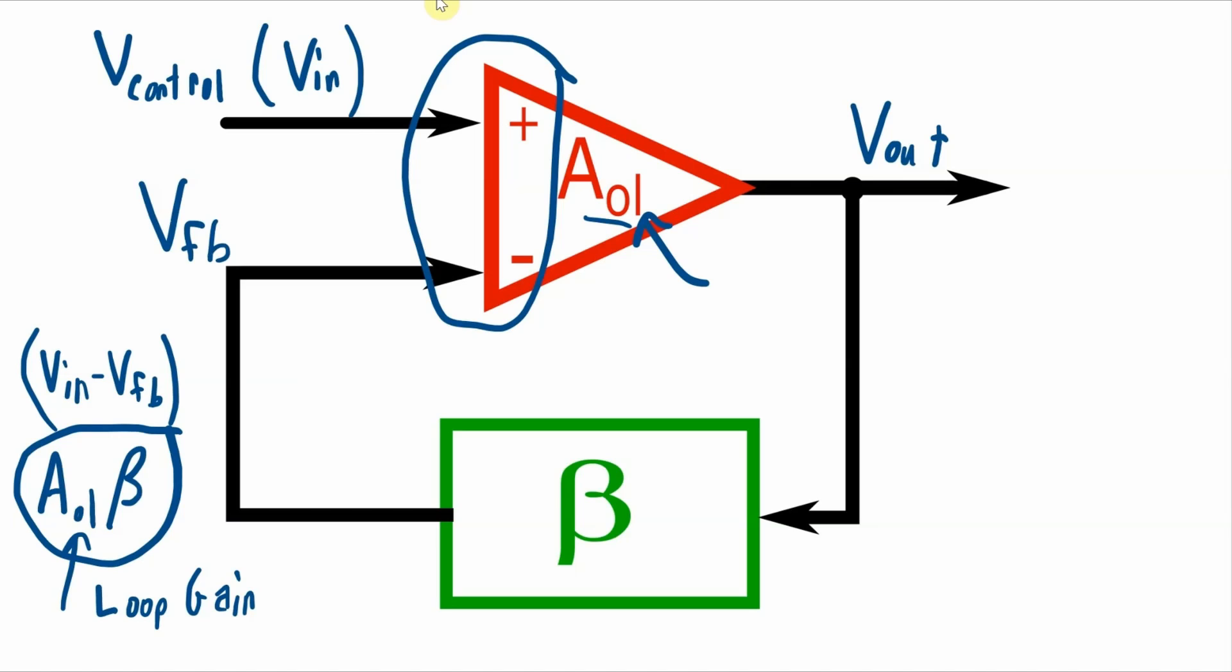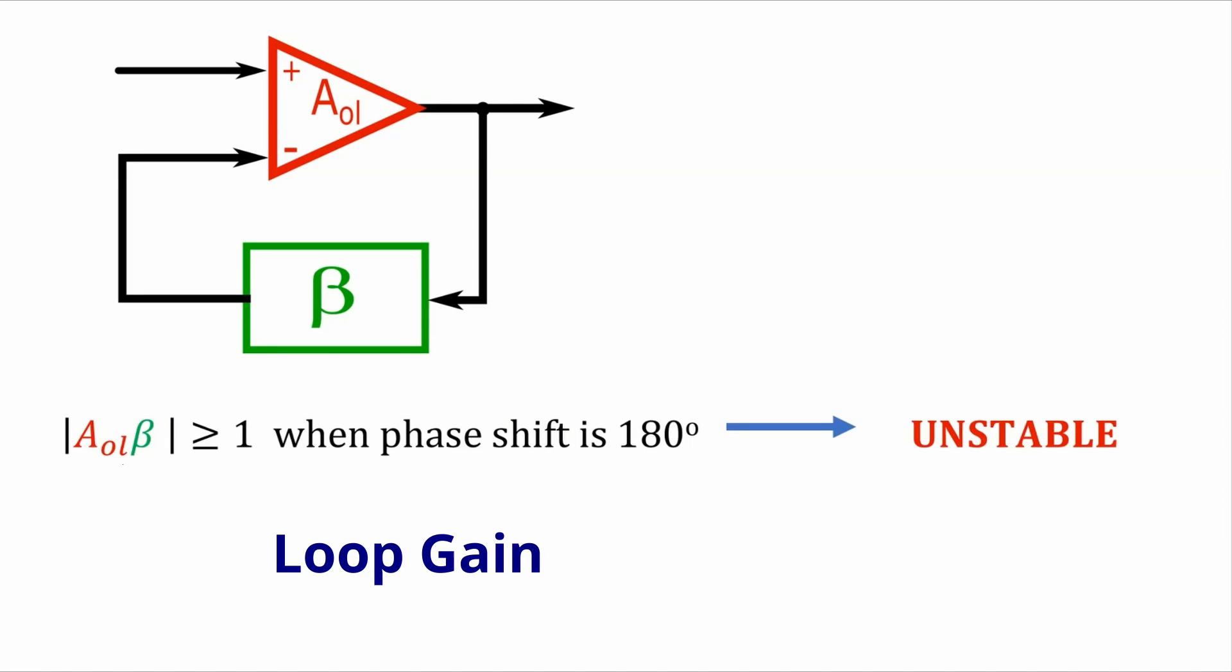And I say potential because if the magnitude of the signal is small enough when the phase shift is at 180 degrees, then the signals will gradually attenuate and won't lead to instability. So to be more precise with our statement, if the magnitude of the loop gain, which is the open loop gain times beta, is greater than or equal to 1 when the phase shift is 180 degrees, then the system is unstable, because any signals that are at that frequency will exhibit positive feedback.